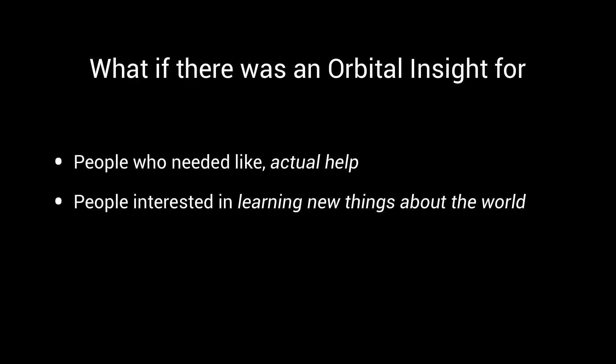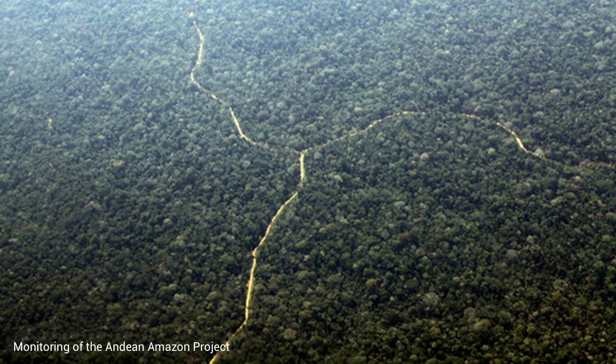We wondered: what if there were a public tool for everyday people, activists, and scientists? There are already some specialized search tools like this. At the forefront of environmental efforts is the non-profit organization Monitoring of the Andean Amazon Project, which uses satellite imagery and custom computer vision software to analyze the Amazonian rainforest. In some of their best-known work, they detected illegal logging roads, which are key precursors to deforestation.